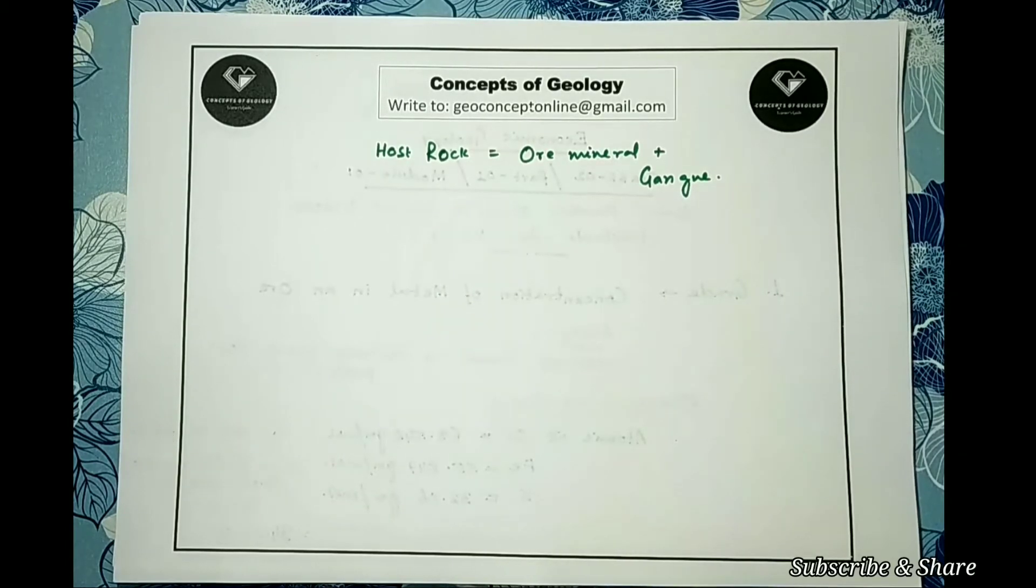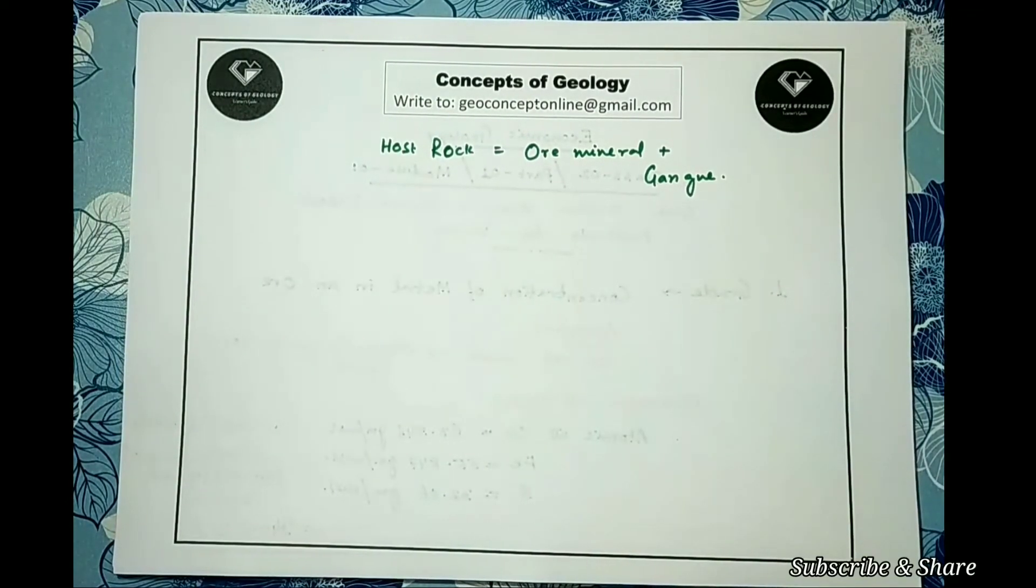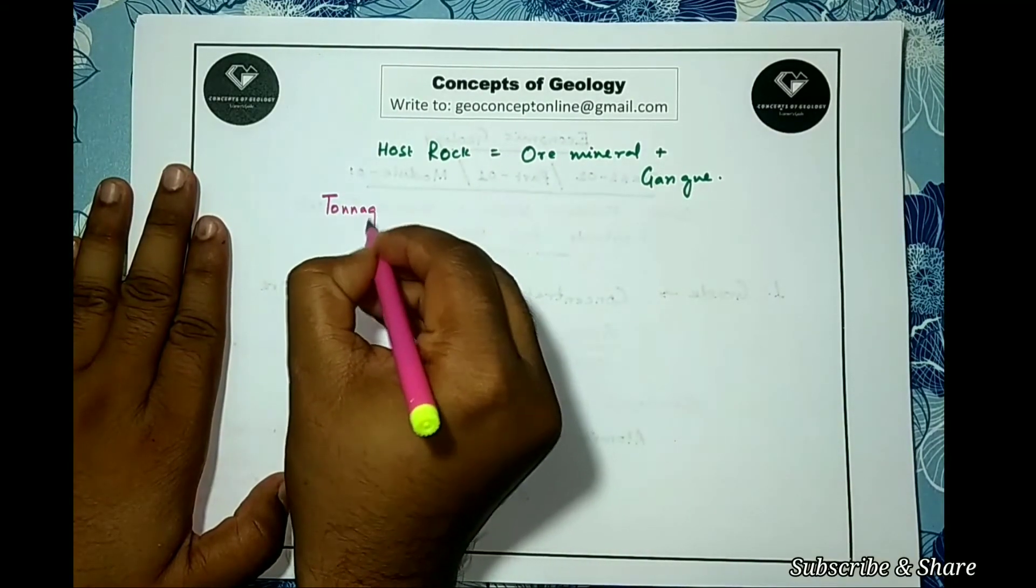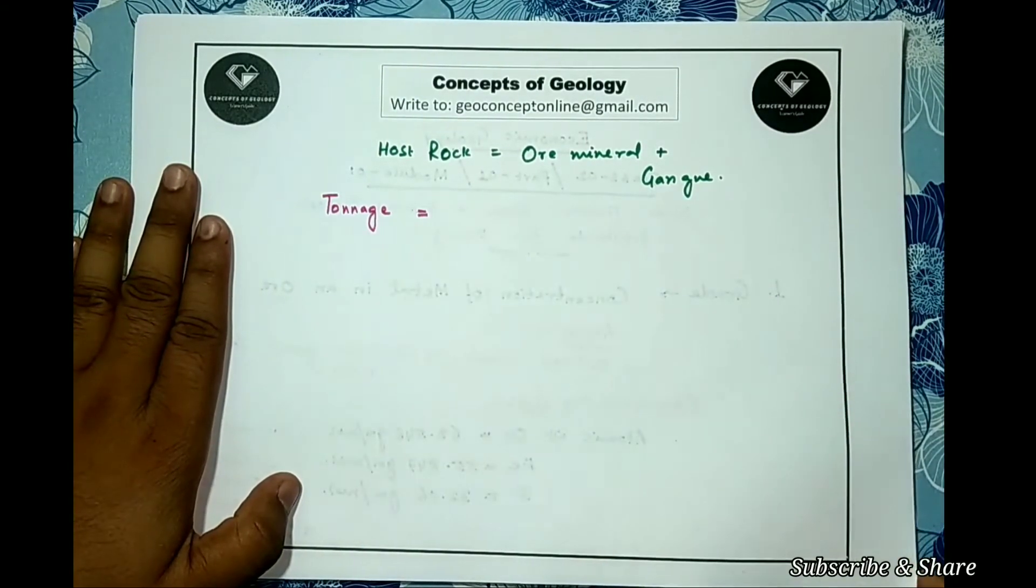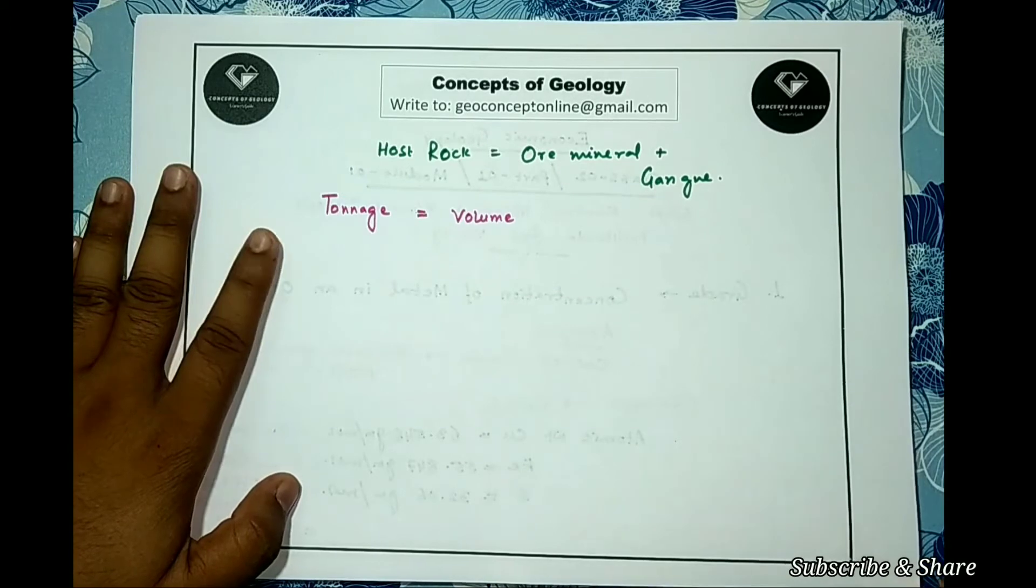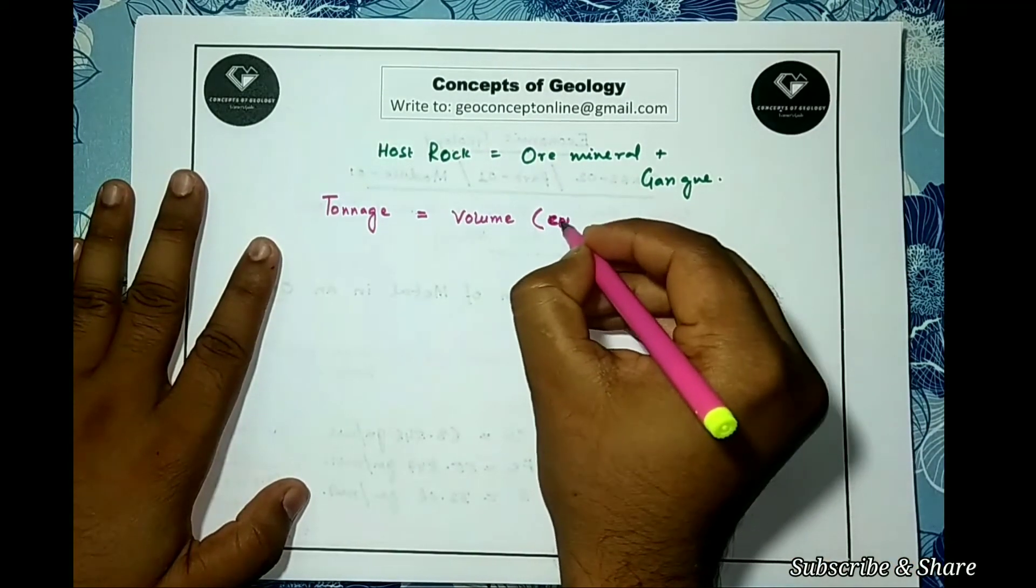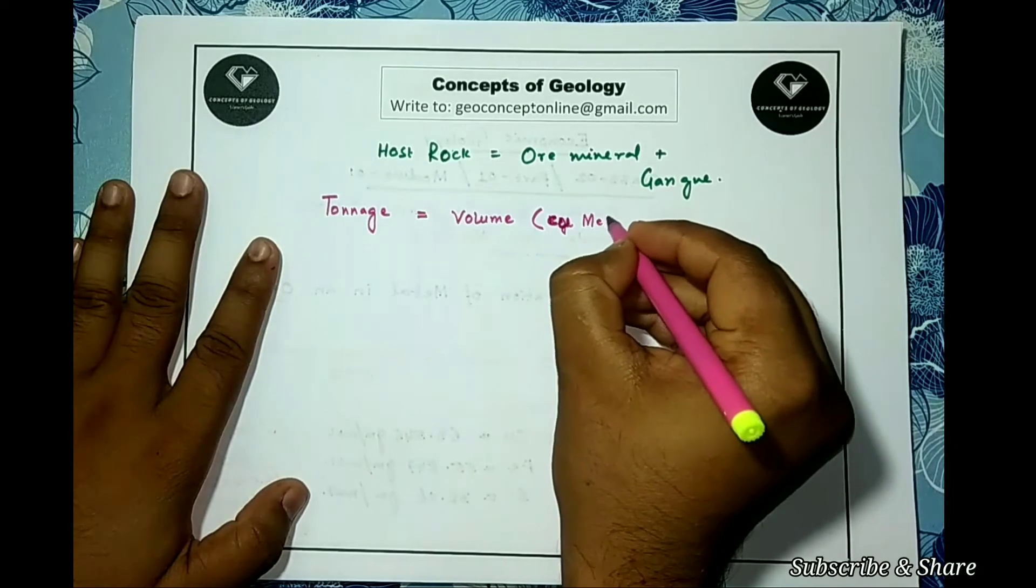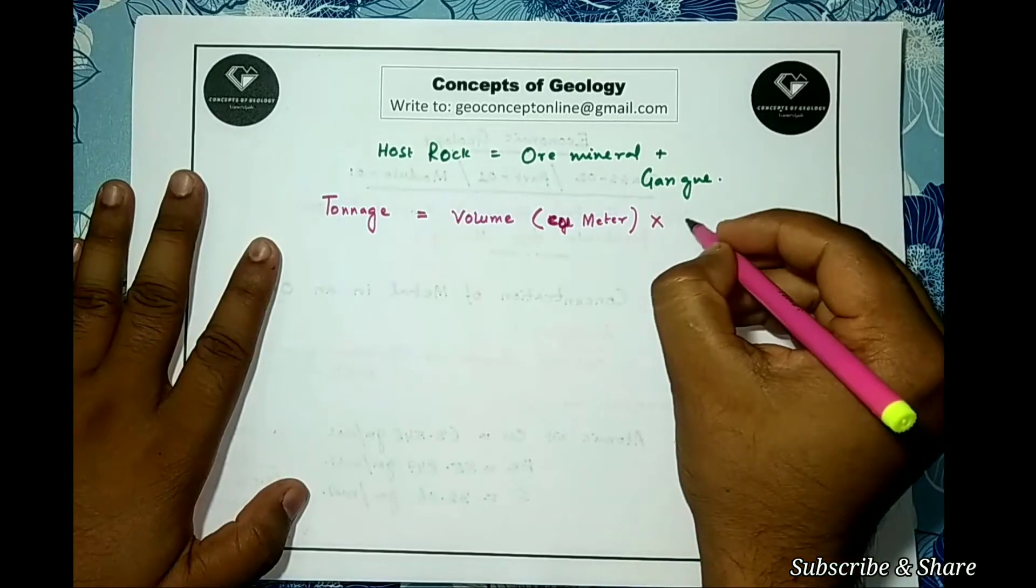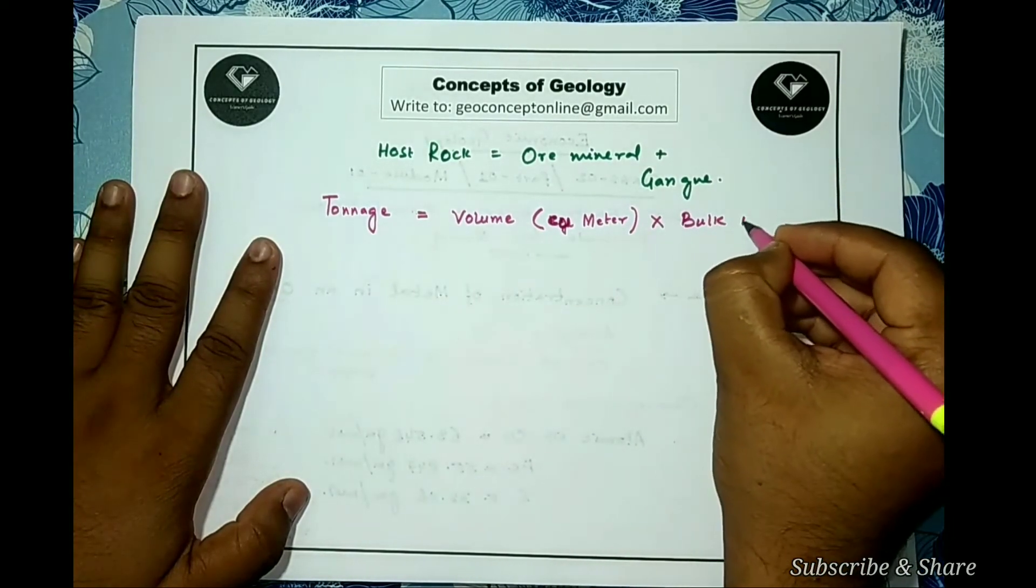Here the metal percentage in a particular ore mineral does not vary significantly, but the host rock may differ in the ore mineral concentration. What normally is done is we calculate the tonnage of the host rock, I mean ore in sense of mining. Tonnage equals the volume of the host rock in SI unit, cubic meter, multiplied by the bulk density of the rock.